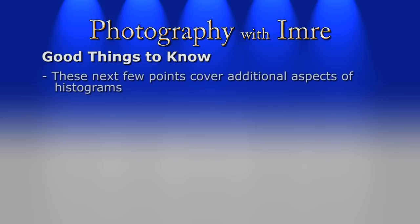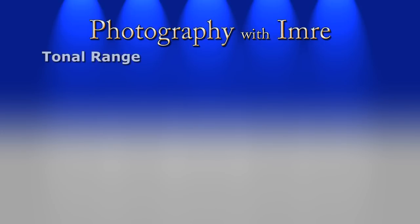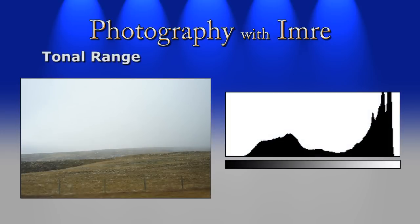Now you have a good overall understanding of what a histogram represents, but here are a few more good-to-know points before moving on to why they're useful and what makes a good or bad one. The tonal range of a photograph is usually defined as the range of tones between the darkest and lightest areas of the image. Notice how the tonal range of this photo does not extend from pure black to pure white, but instead starts from a dark grey to just off pure white.